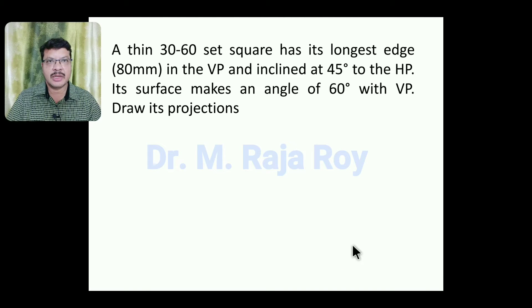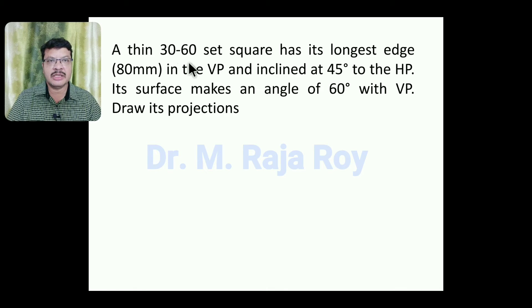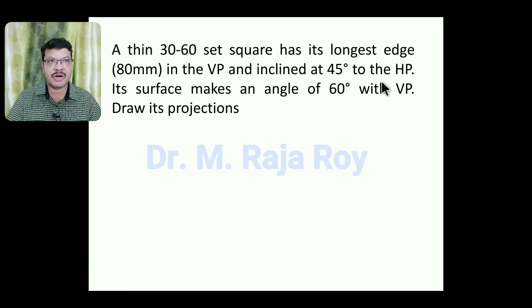Dear students, in this video I am going to explain a projections of planes problem. The problem is something like this: a thin 30-60 set square has its longest edge of 80mm length in the VP and inclined at 45 degrees to the HP. Its surface makes an angle of 60 degrees with the VP. Draw its projections.